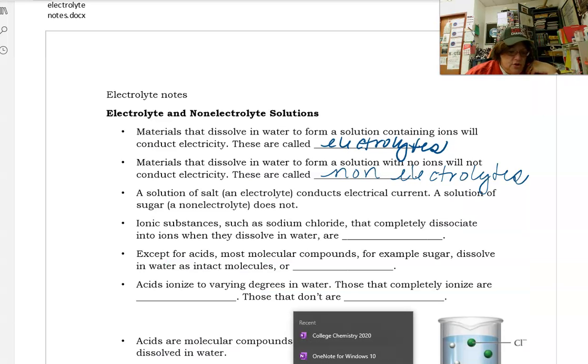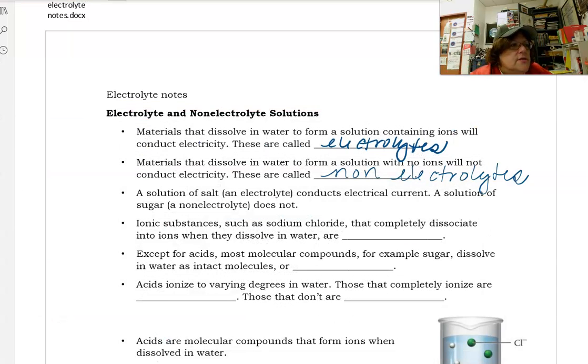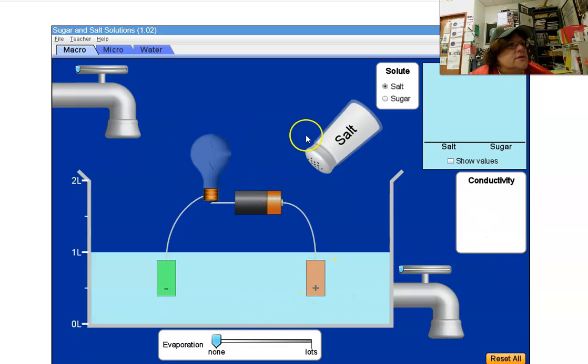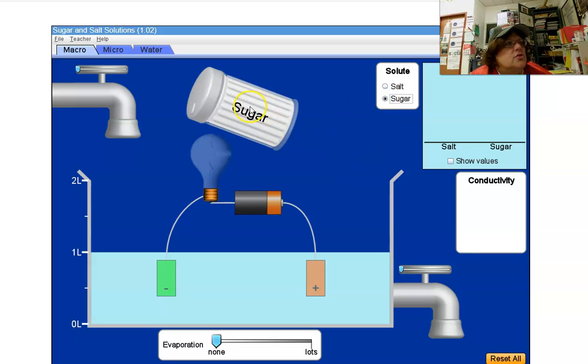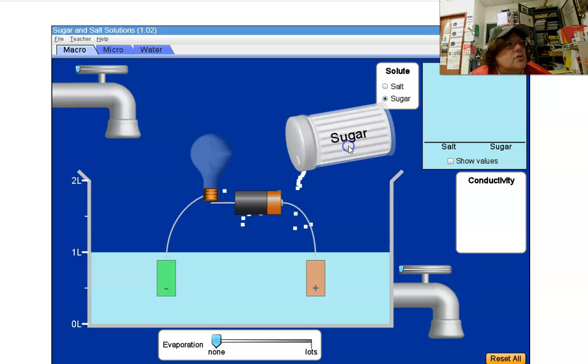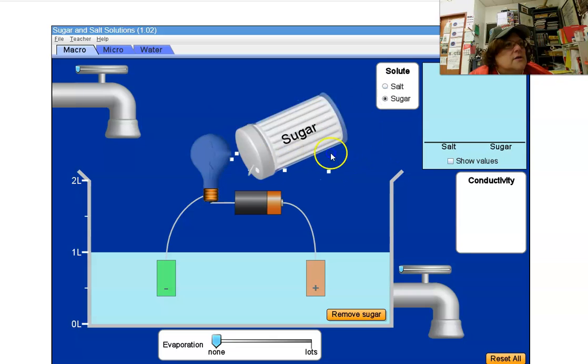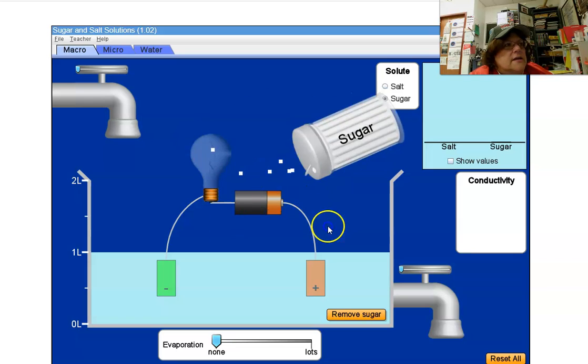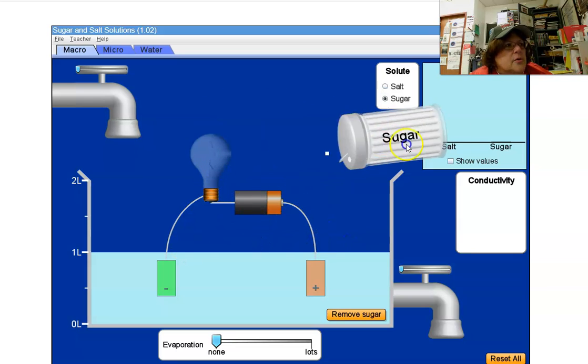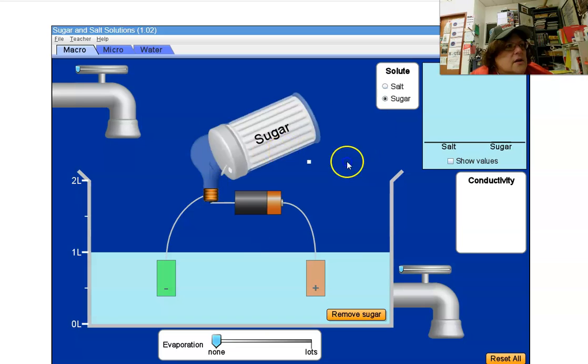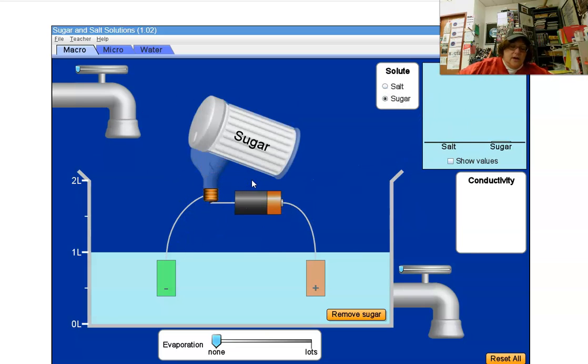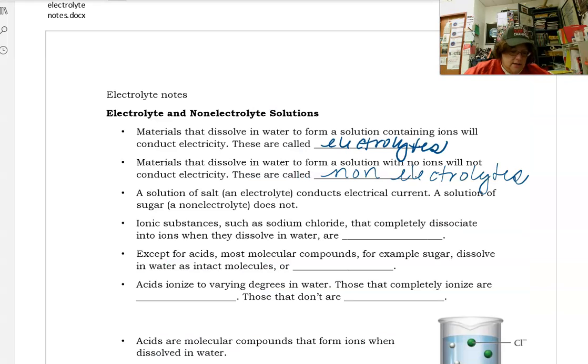A solution of sugar does not. So now we can look at this and remove the salt. Notice the light goes out. I'm going to change to sugar and add sugar. As I'm adding the sugar, the light is not lighting up, no matter how much I add. In this case, sugar is a non-electrolyte, but salt would be an electrolyte.